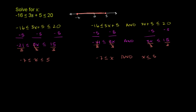Try x=5: 3 times 5 plus 5 is 20. Negative 16 is less than or equal to 20, which is less than or equal to 20 — that works. Try x=negative 7: 3 times negative 7 is negative 21, plus 5 is negative 16. So negative 16 is less than or equal to negative 16, which is less than or equal to 20 — that works too. You could also try a value outside the solution set, like 10. 3 times 10 plus 5 is 35. Negative 16 is less than or equal to 35, but 35 is not less than or equal to 20, so 10 is not part of our solution set.